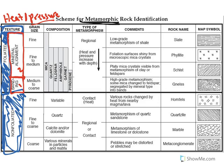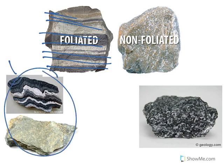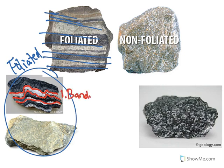Let's see what this actually looks like. Anytime you see lines — whether they're straight or not — when you have lines, you're dealing with foliated rocks. These are all foliated. Sometimes the lines are squiggly due to the intense heat and pressure. We call this first type banding — they are banded layers.